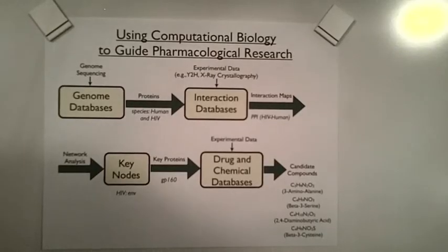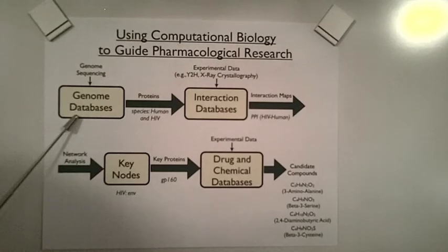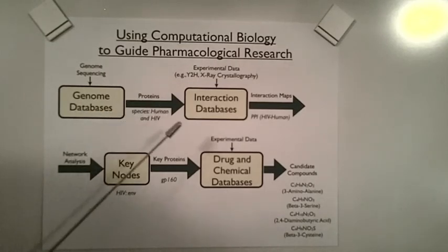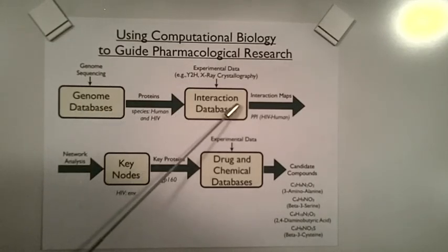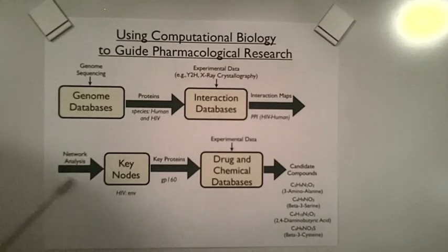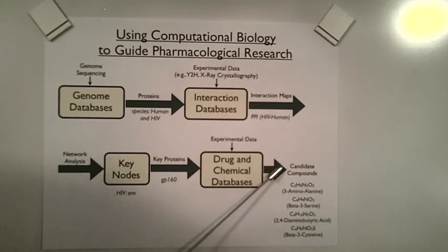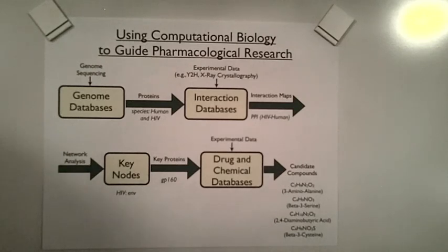In conclusion, my project outlines a process for using computational biology to guide pharmacological research. Consult gene and organism databases to find proteins from species of interest. Consult interaction databases to construct protein-to-protein interaction maps. Use network analysis techniques to determine key nodes and proteins. And consult drug and chemical databases to find candidate compounds for pharmacological research that affect those proteins.